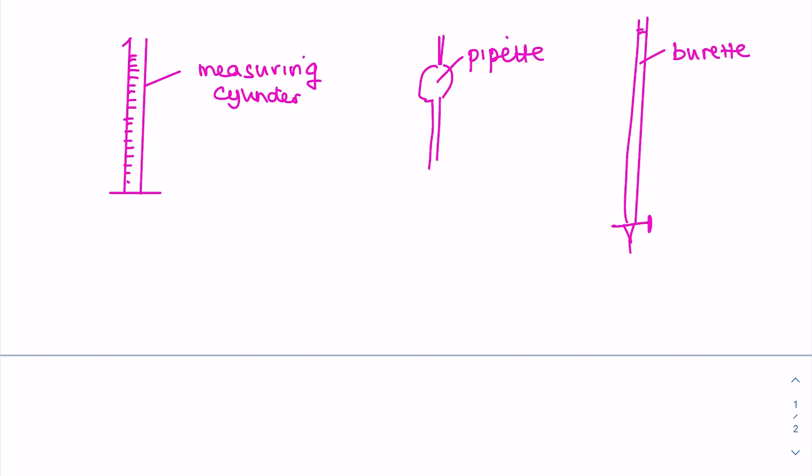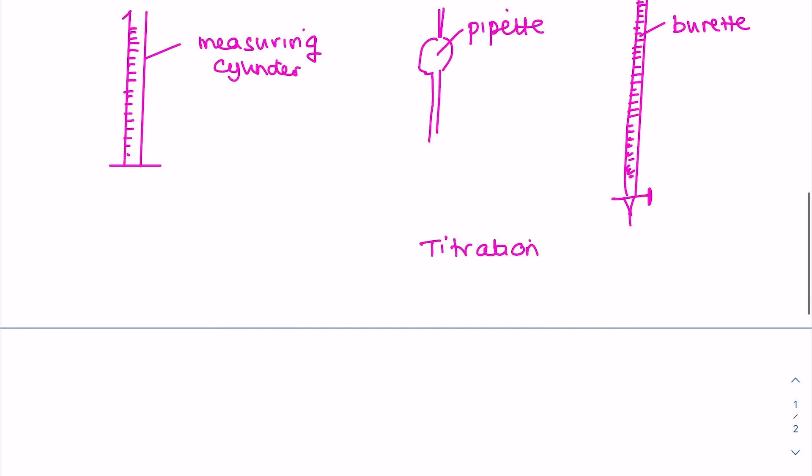A burette is an amazing piece of apparatus. It allows you to measure volumes of liquid extremely accurately, basically to the nearest drop. Remember you use a burette in a titration. So you use that burette to add either the acid or the alkali to a conical flask which contains an indicator, and that indicator changes color when neutralization has been reached.